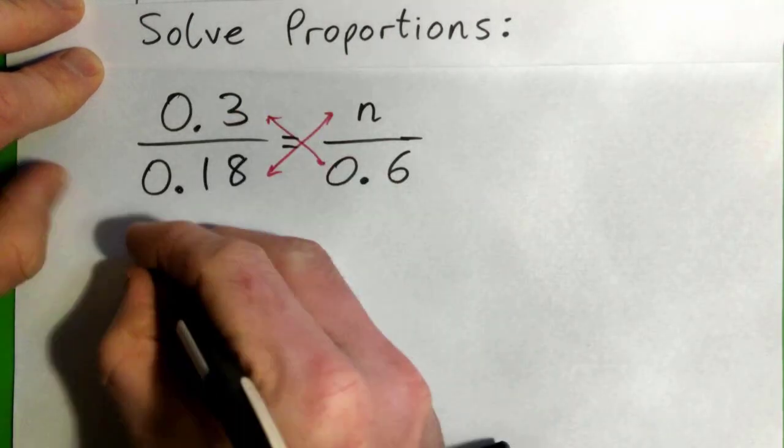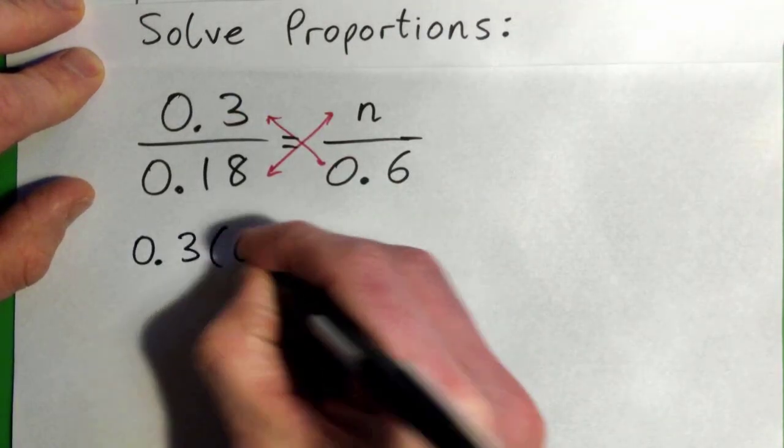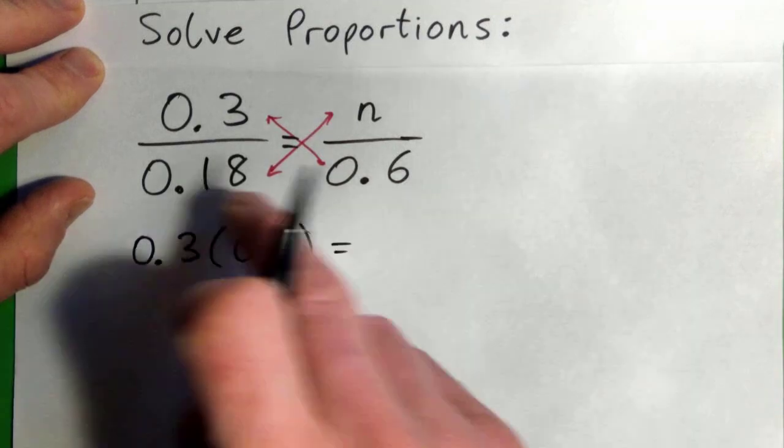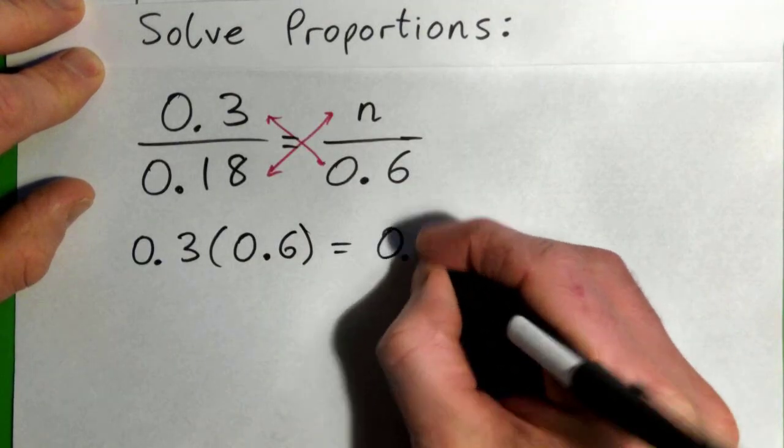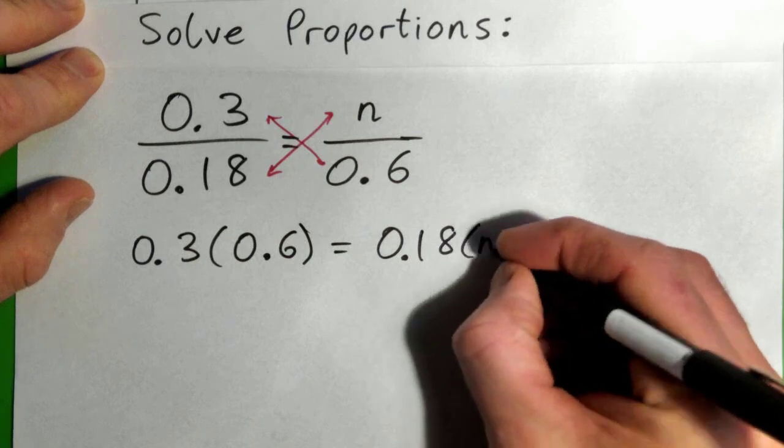But let's do it. So this times this, so 0.3 times 0.6 equals this times this, 0.18 times n.